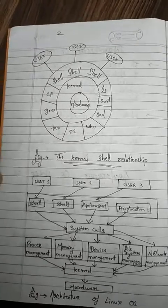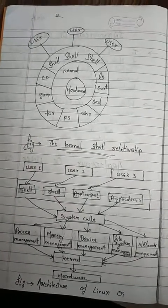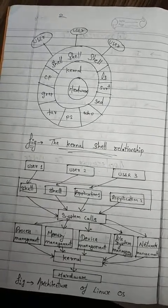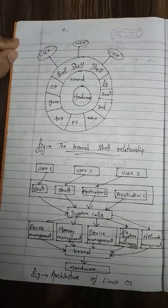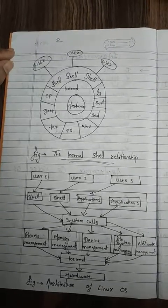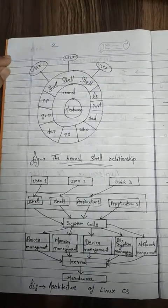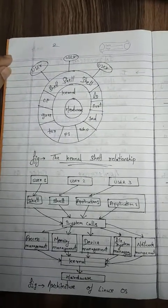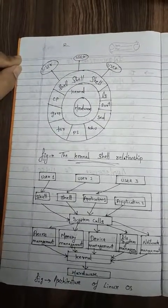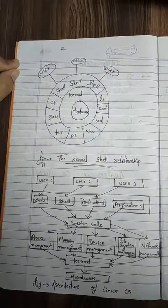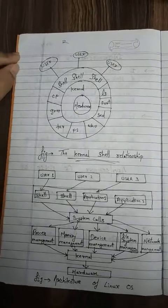If we look at the architecture diagram, there is a kernel which works like a CPU, managing everything — process management, memory management, device management, file management, and network management. All these are managed in the kernel and stored in hardware. After that, system calls and applications come, and users make system calls through which all processes and management flow into the kernel and hardware.